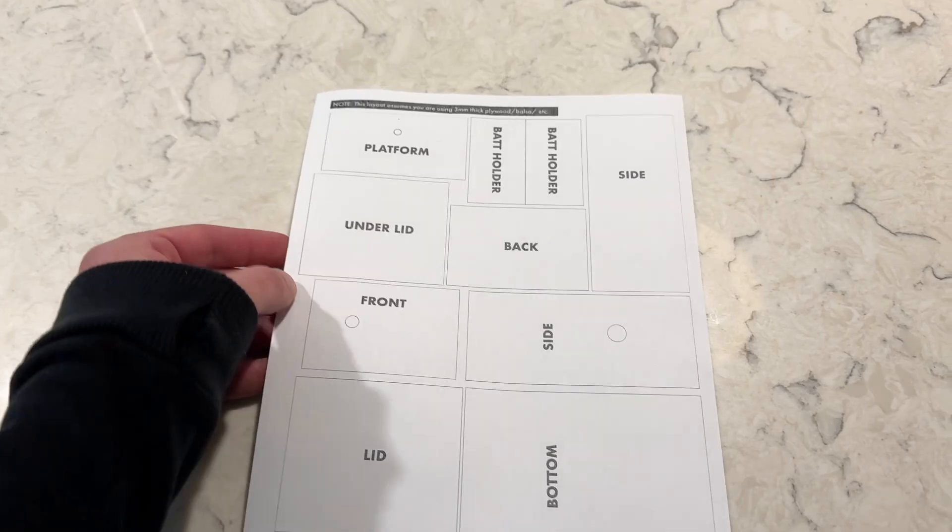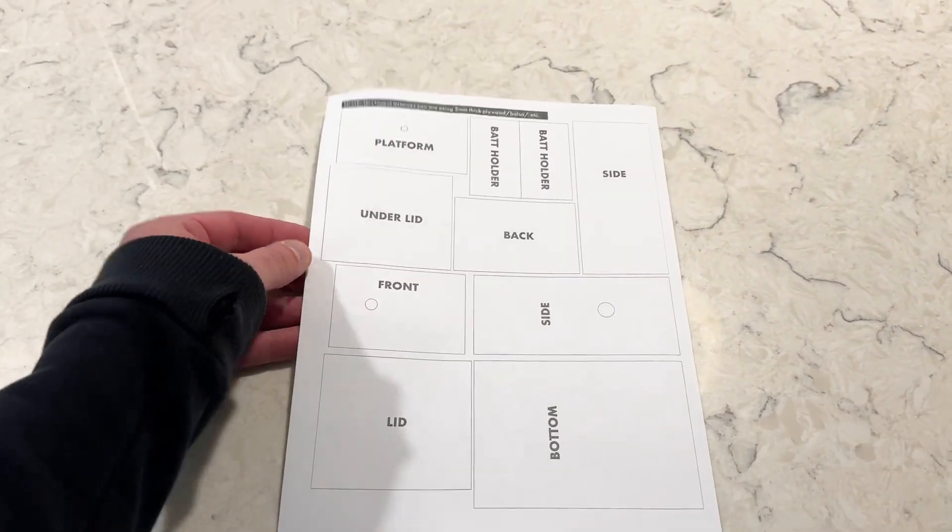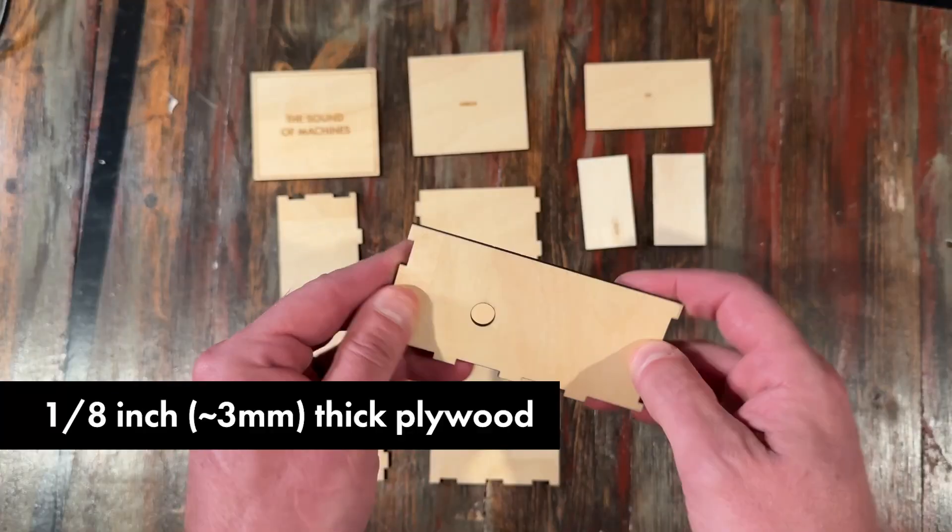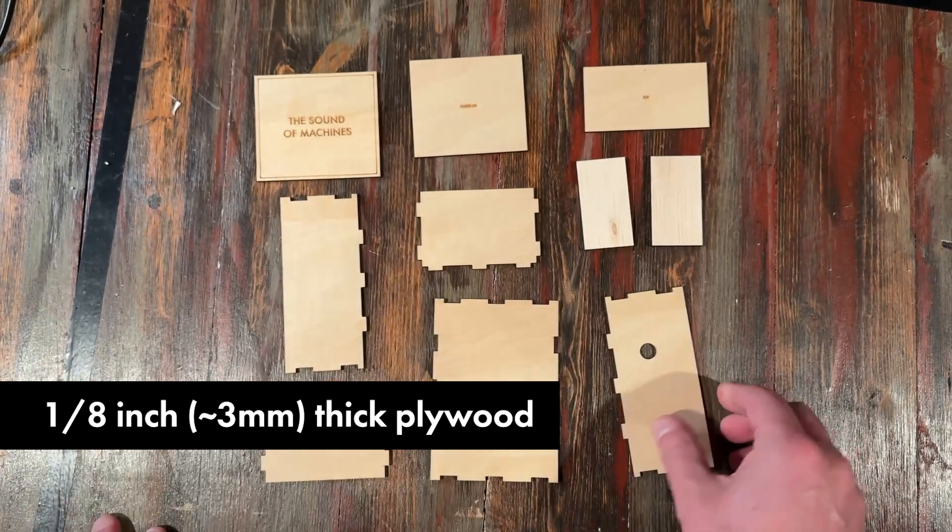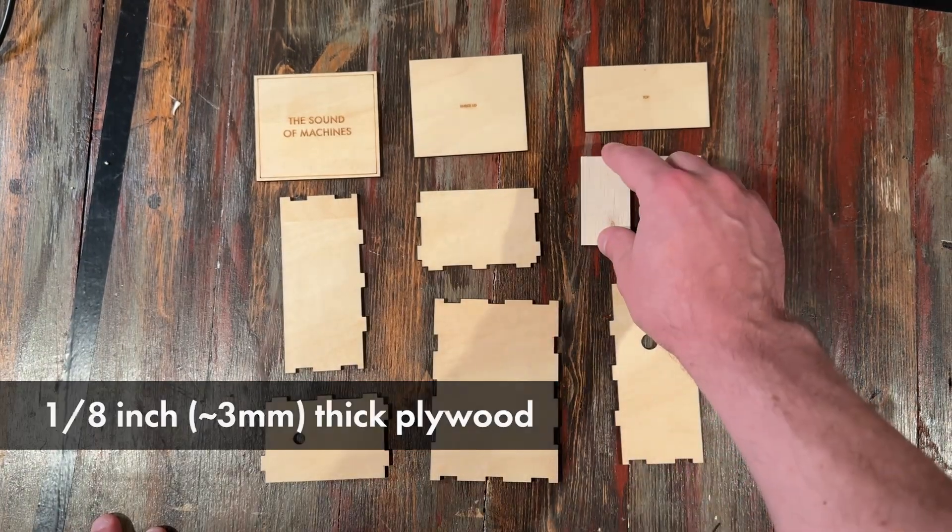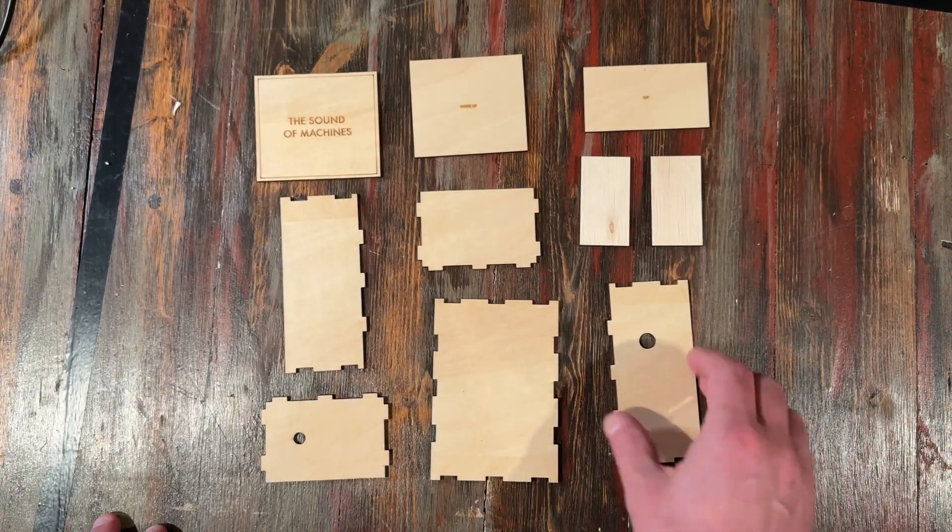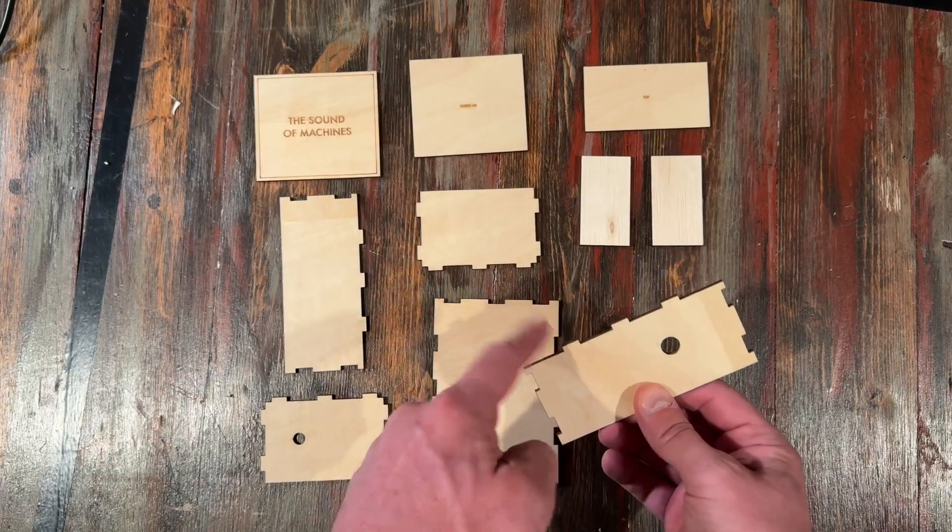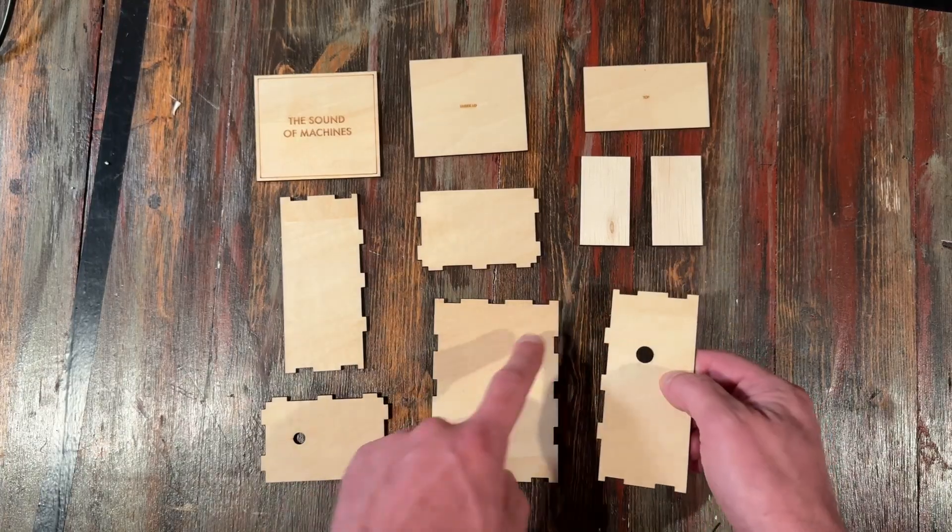Now if you do want to use this exact type of box, I put a document below in the Patreon description that has all the layouts that you need. With thin wood like this, it's easy to cut all the pieces out by hand carefully with a box cutter. And if you do that, you don't need to cut these notches out. It's really easy to make these on a laser, but not so easy by hand.